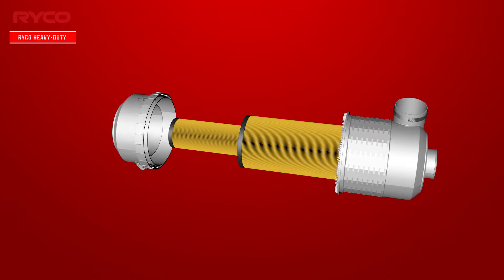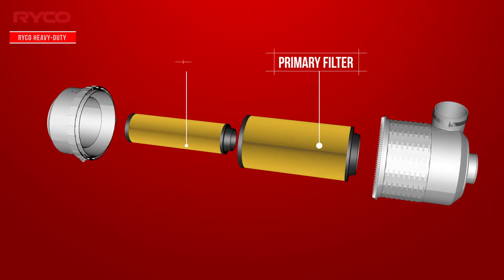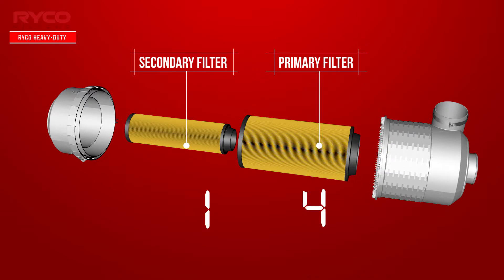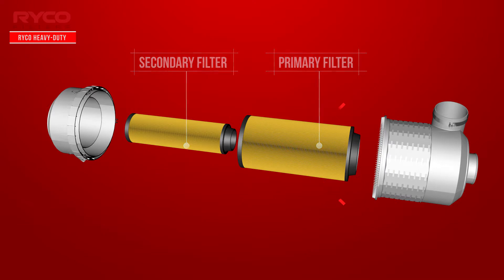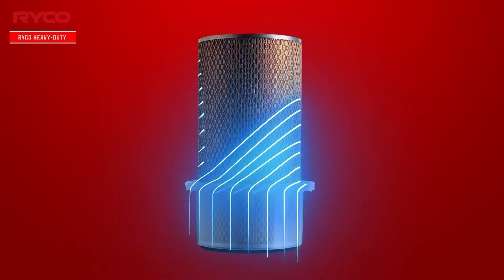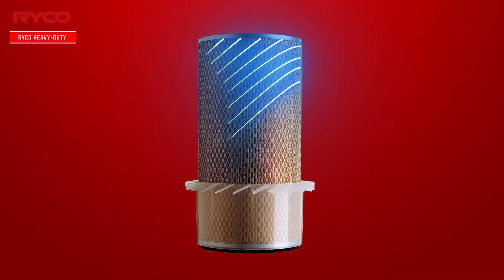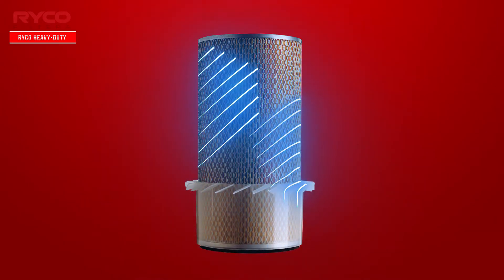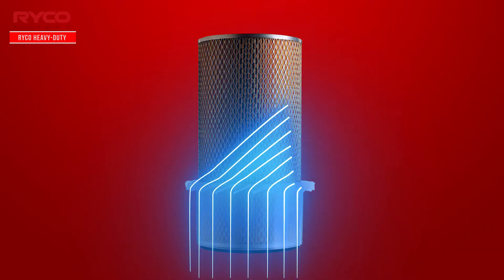In some heavy-duty applications, a primary and secondary air filter may be used. Where this is the case, the secondary will only be changed once to every five of the primary. The main purpose of the secondary filter is to stop debris and contaminants entering the intake when the primary is changed, or when a failure occurs in the primary filter. Some filters are fitted with specially designed plastic fins that reduce filter blockages by forcing the airflow into a swirl or vortex pattern. Heavy dirt and other particles are diverted away from the element and trapped in the housing, rather than blocking the filter media.